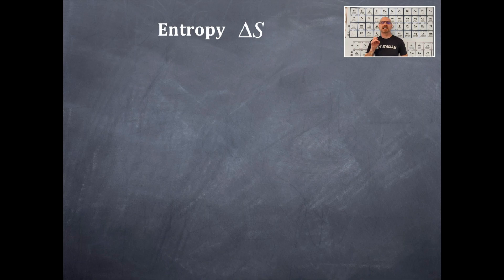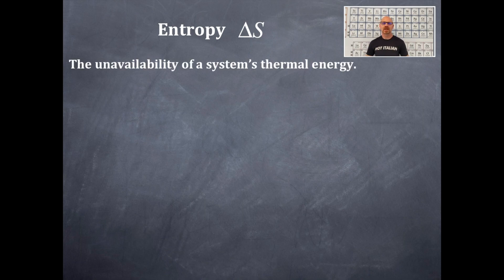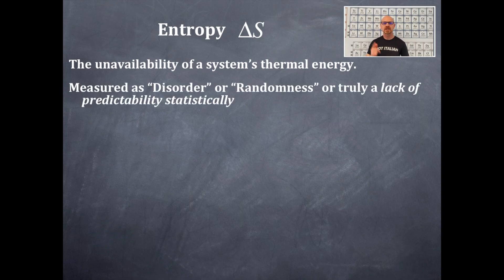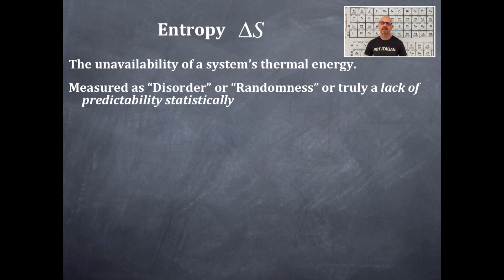Entropy is delta S. What is entropy? Entropy is the unavailability of a system's thermal energy — what does that mean? It's measured as disorder or randomness. It's truly a lack of predictability. If you have taken a statistics class — and if you haven't, take one — you'll understand more about the lack of predictability. Entropy is a measurement of that randomness and disorder.